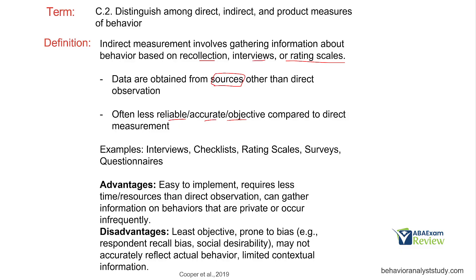What are some advantages of indirect measurement? It's easy to implement — a quick conversation, a quick rating scale, easy to perform. Less resource-intensive and less time-intensive. You can gather information on behaviors that are private — those private events or behaviors that occur infrequently. Maybe you've been told about a behavior you've never seen; this might be the way to gather information. Disadvantages: it's not objective — it's going to be everybody's opinion, prone to bias especially from direct caregivers and stakeholders, and it may not accurately reflect actual behavior. Our memories are often not accurate, and we get limited context. We're just getting an anecdotal story of what occurred. Is it worthless? Absolutely not. Everything has a place. Is it better than direct measurement? Not very frequently.